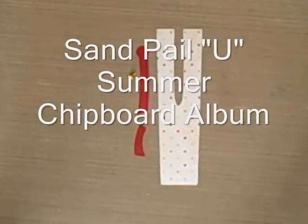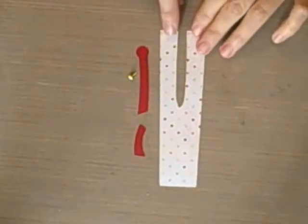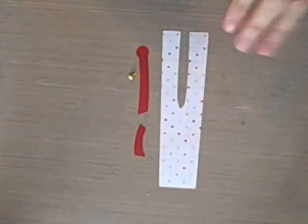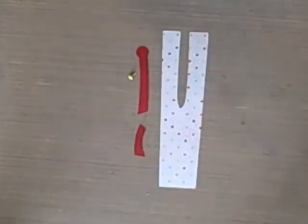The next piece we're putting together is the U. The U is actually supposed to look like a shovel and bucket. The shovel is on the other side and this is the bucket.